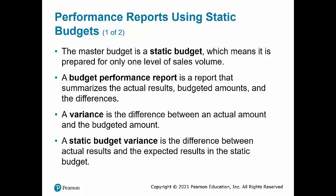A variance is the difference between an actual amount and a budgeted amount. A variance is considered favorable if it increases operating income and unfavorable if it decreases operating income. A static budget variance is the difference between actual results and the expected results in the static budget. Knowing why actual amounts differ from the budget enables managers to identify problems and decide what action to take.